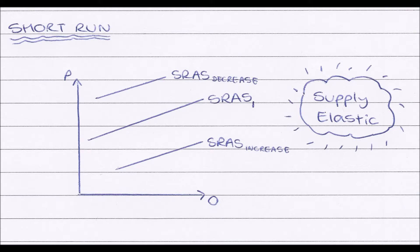So, similar to aggregate demand, on our y-axis we have price and on our x-axis we have output, how much is produced in order to meet demand.